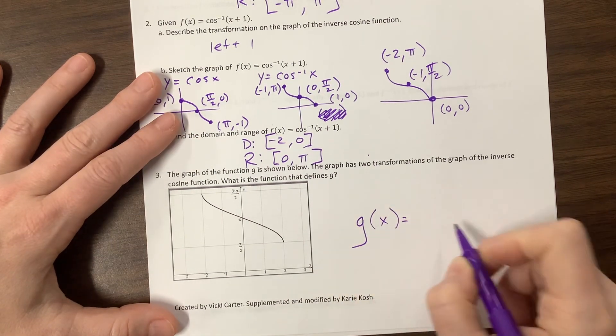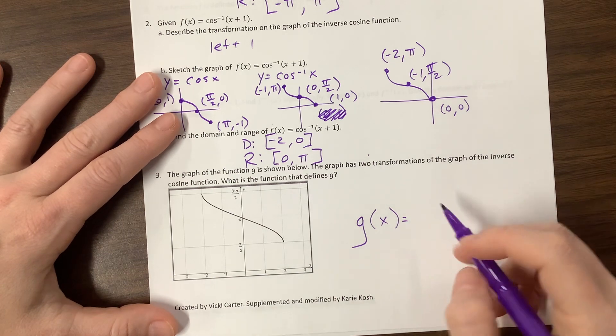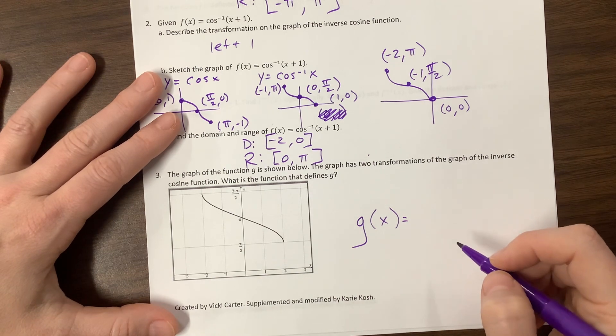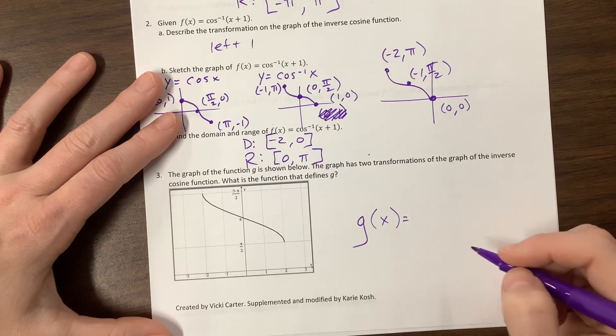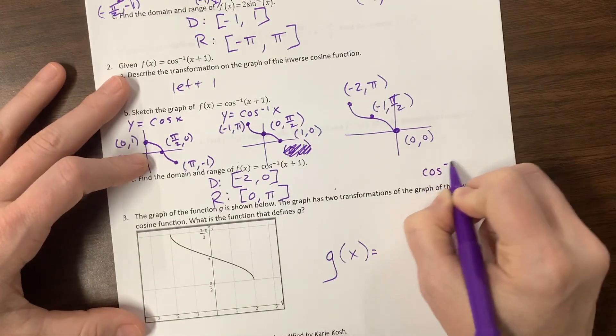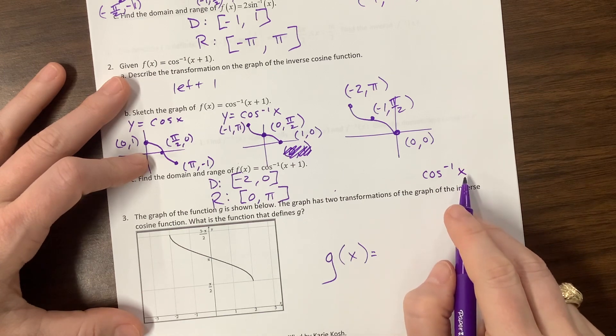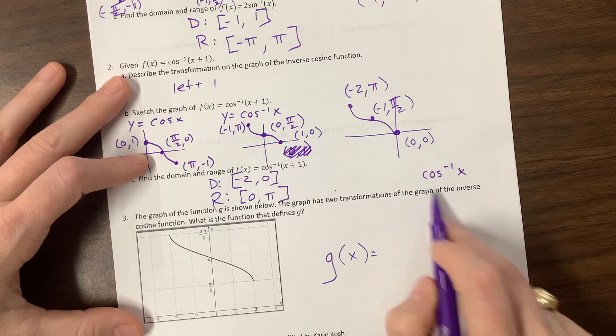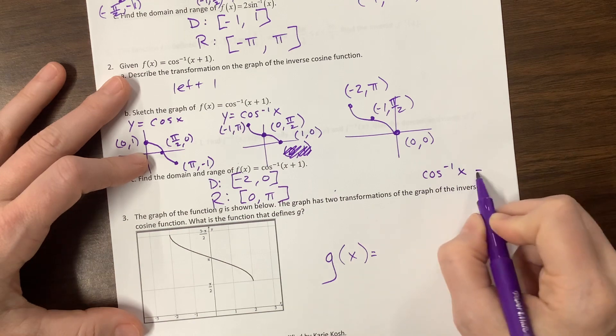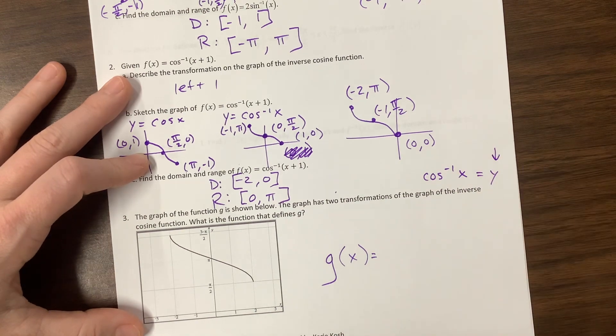g of x is equal to, yeah, because the inverse cosine, we wouldn't want our variable to be theta because theta is typically an angle. But if you have cosine to the negative one of x, x is just a variable. But this is giving you an angle measure as your answer. So in this case, your y is your angle.